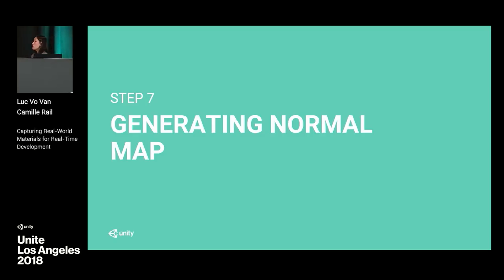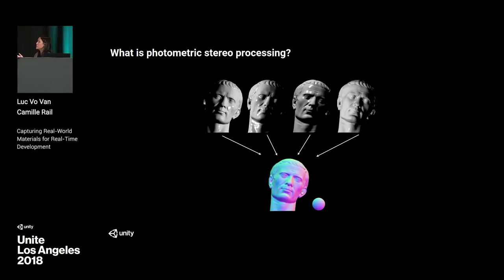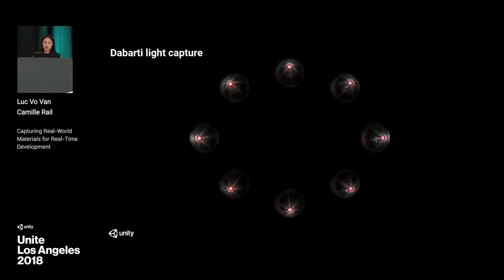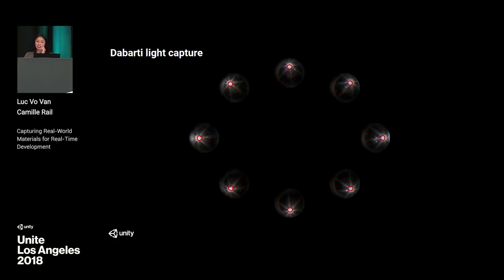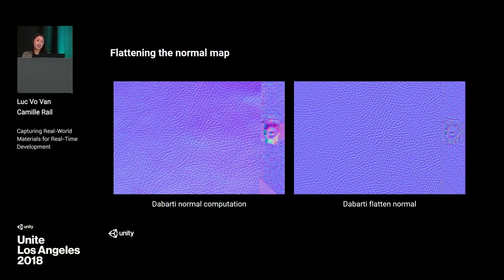So we've generated our base color map and our smoothness map. What we're missing now is the normal map. We have the equivalent of four images with different light angles, but with eight different angles. We're going to generate our normal map using the Barty. Using the chrome ball, the Barty captures light information — the red circle it creates tells us from which angle and direction the flash comes. With this, it generates the normal map. On the left you'd have the normal map created directly from the Barty, and on the right the flattened version, which we want for tiling.